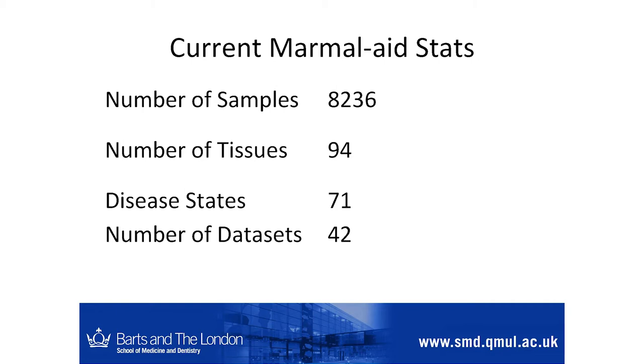We're over 8,000 samples, and the great thing is that we're not just all in blood. We've got brain, ES cells, and lots of different types of tissues, as well as disease states — from Alzheimer's and depression to lots of different cancers as well. So there's a real scope for being able to look across a lot of different datasets for whatever you're interested in.